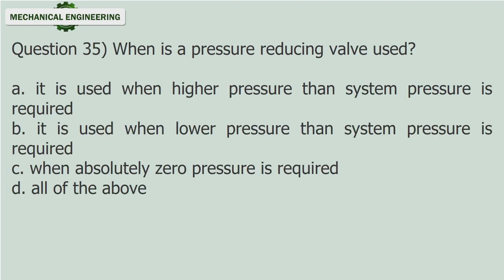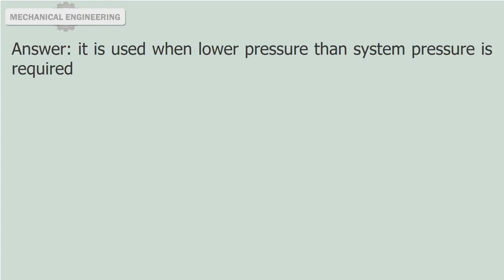Question 35: When is a pressure reducing valve used? A. It is used when higher pressure than system pressure is required. B. It is used when lower pressure than system pressure is required. C. When absolutely zero pressure is required. D. All of the above. Answer: It is used when lower pressure than system pressure is required.